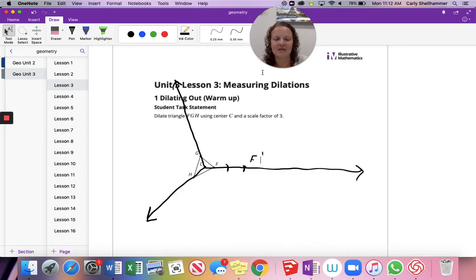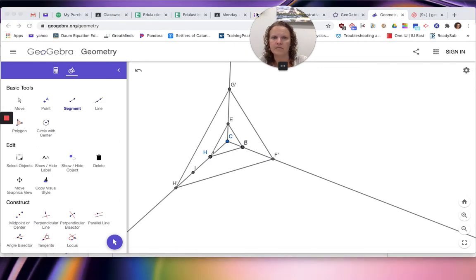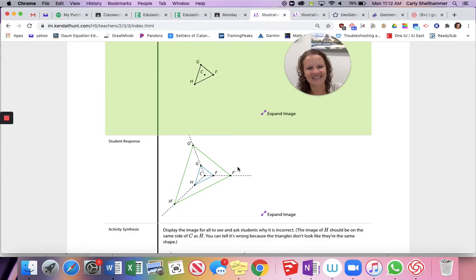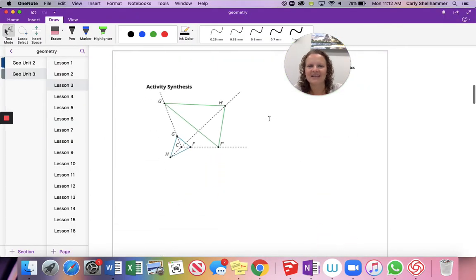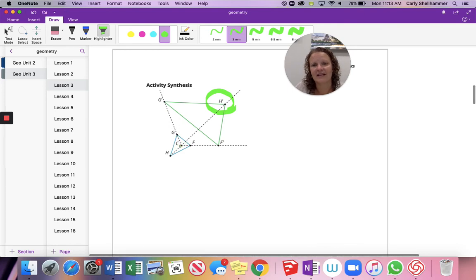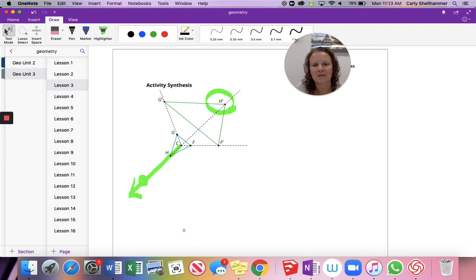Yours in your book would look very much like that. So we did a great job. Moving on. So here in this activity synthesis. Display the image for all to see and ask students why it's incorrect. So if we look, that right there isn't in the right place. We dilated it the wrong direction. That's the wrong direction. It needed to go this direction out here somewhere. So H is not correct.